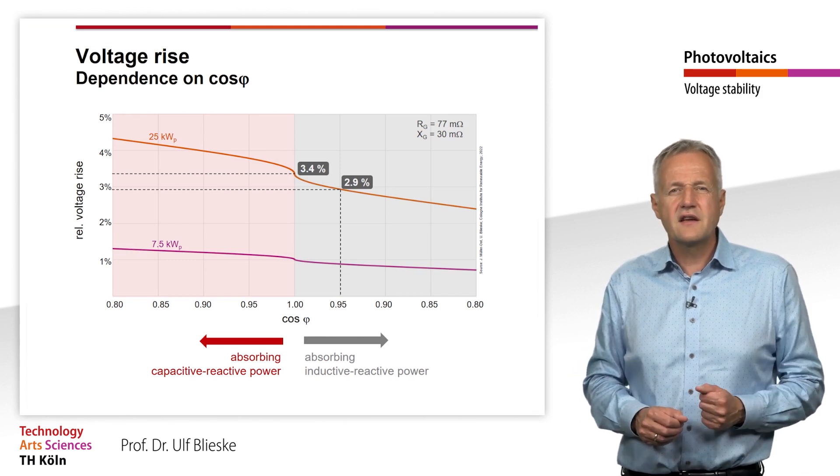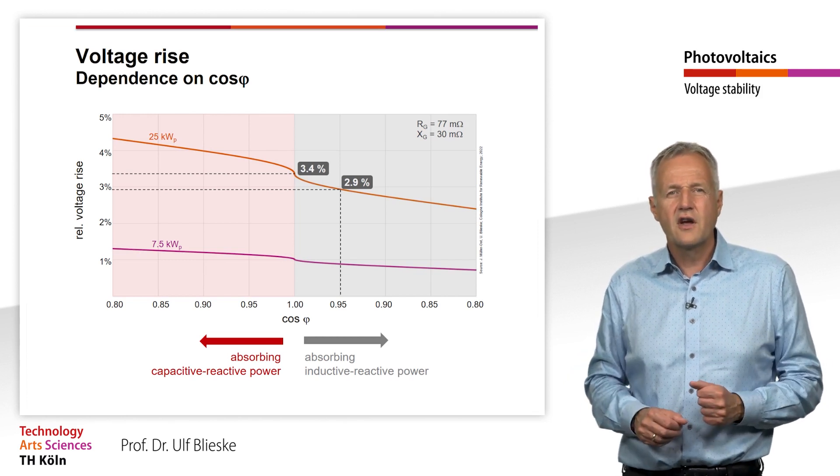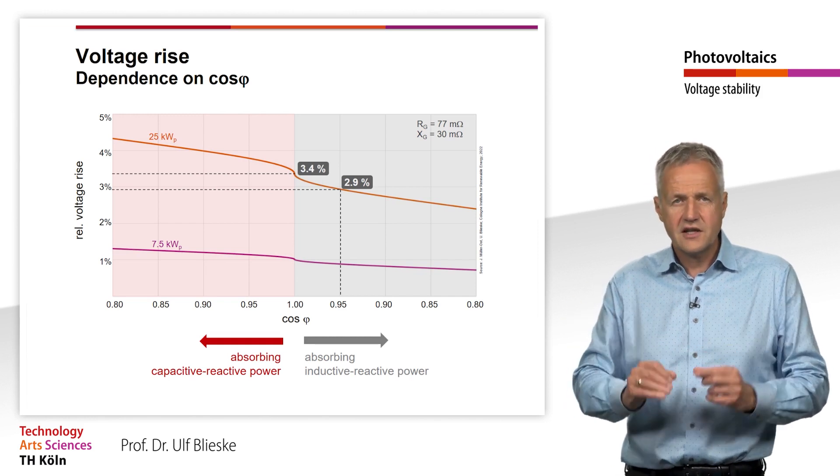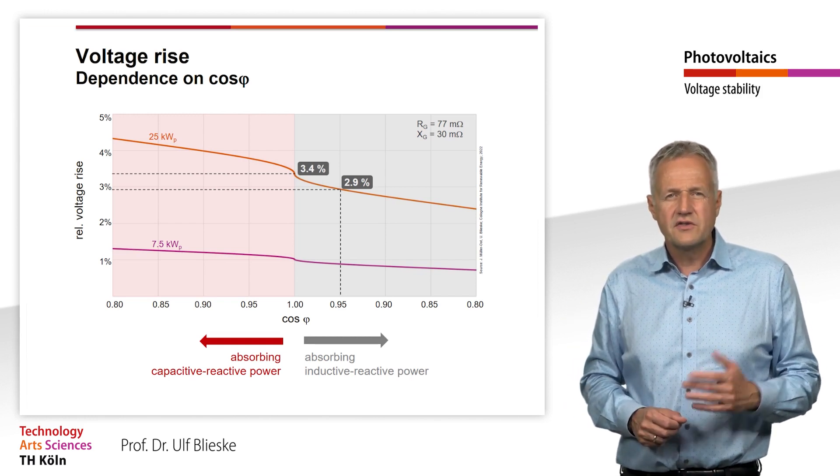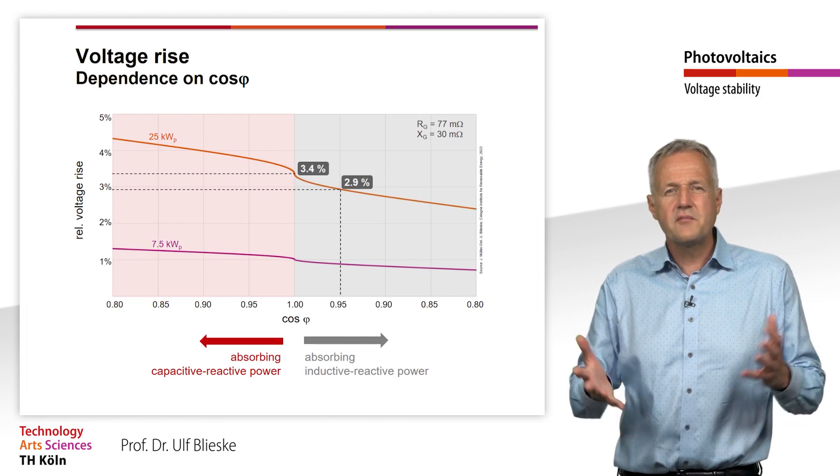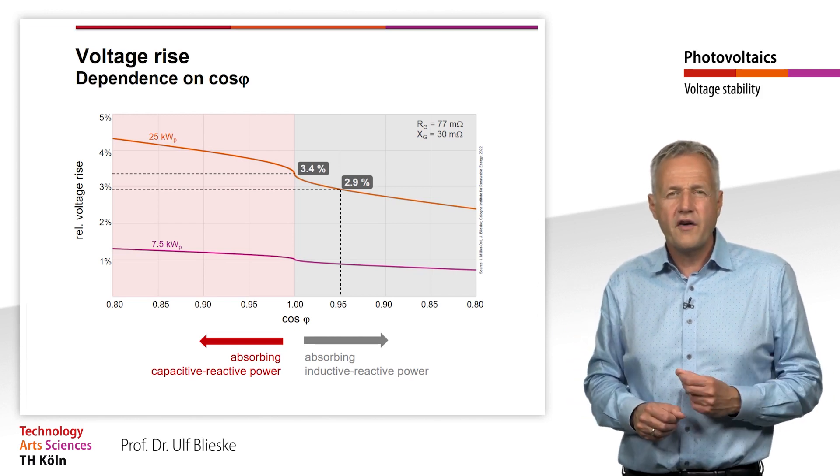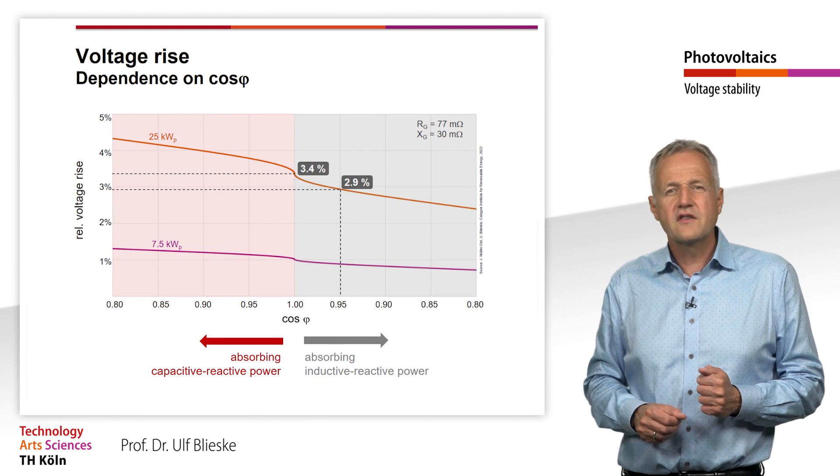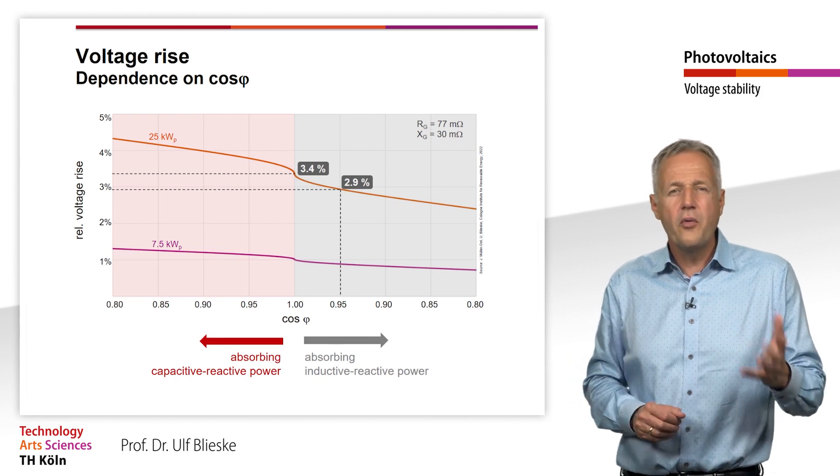If we now set an inductive phase shift on the inverter, the voltage rise drops significantly. With the larger PV system, it can be reduced by 0.5 percentage points with a power factor of 0.95.